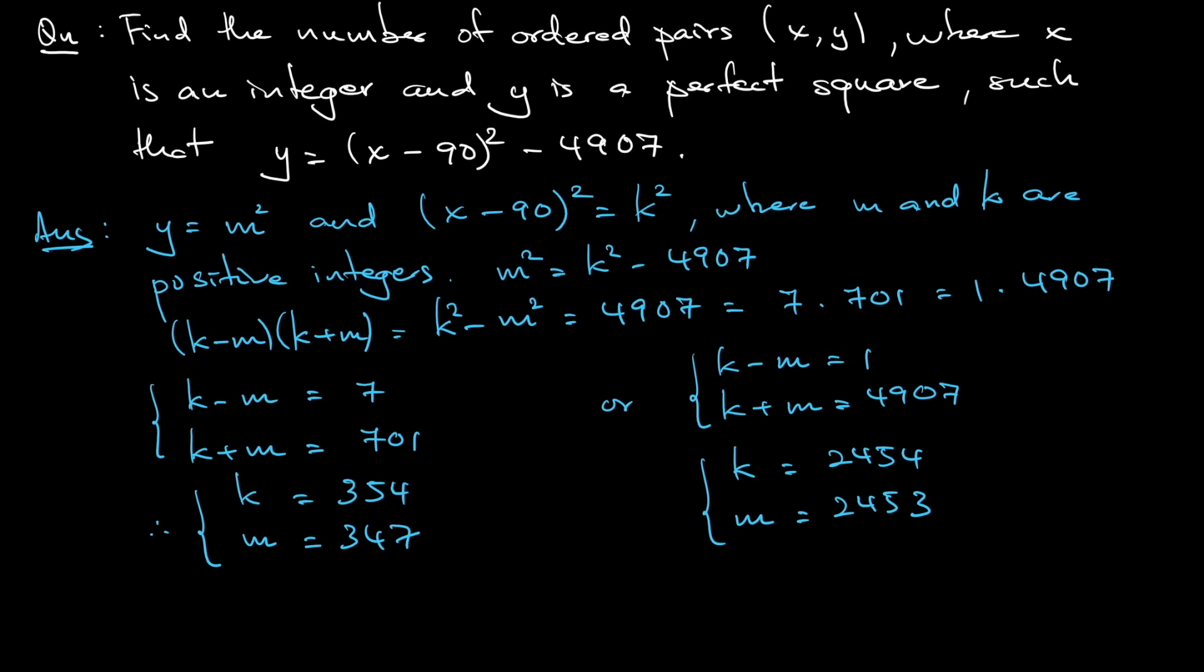So how many ordered pairs? We do not want to find the number of ordered pairs of k and m, we want to find the number of ordered pairs of x and y, whereby y is m square and (x minus 90) square is k square. For each pair of values of k and m, notice that I would be able to get my y would be just m square. My x, because x is an integer, they never mention positive or negative, so in fact, my x minus 90 can be plus or minus k.